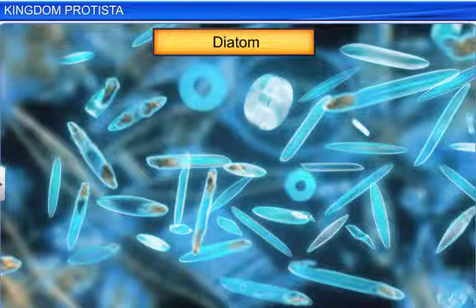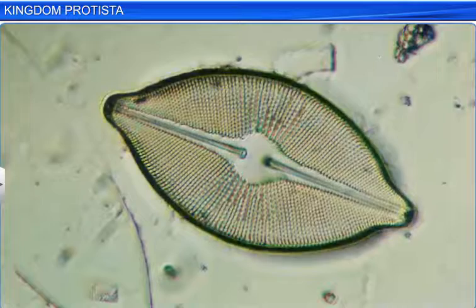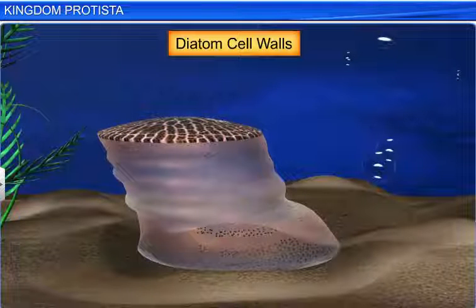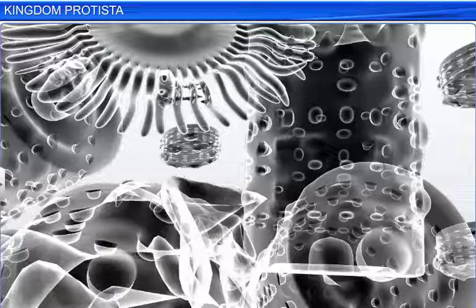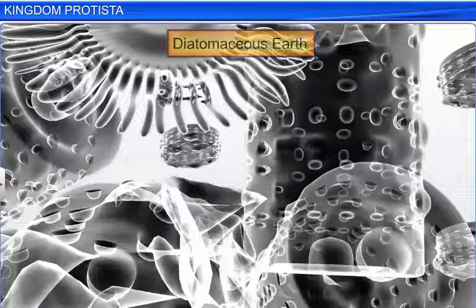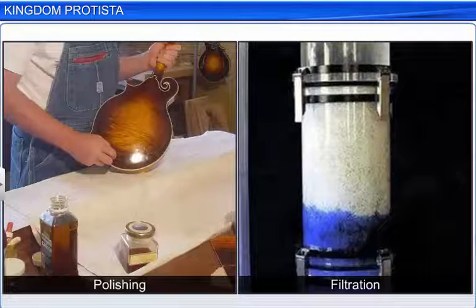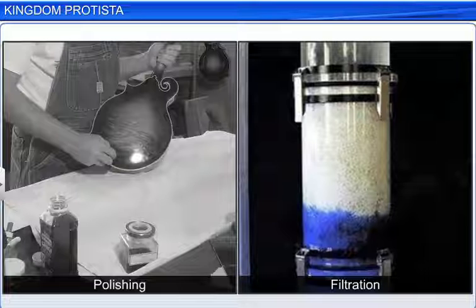Diatoms are known as the chief producers in the oceans. Diatom cell walls are embedded with silica, making them indestructible. Diatoms therefore leave behind a large amount of cell wall deposits in their habitats. These fossilized remains of diatoms form Diatomaceous Earth, which can be put to various uses like polishing and filtration of oils and syrups.